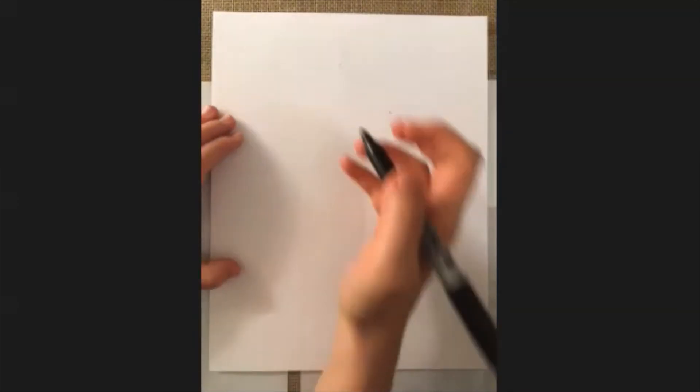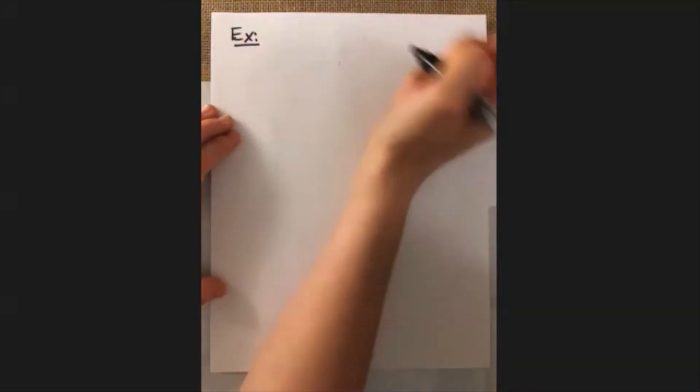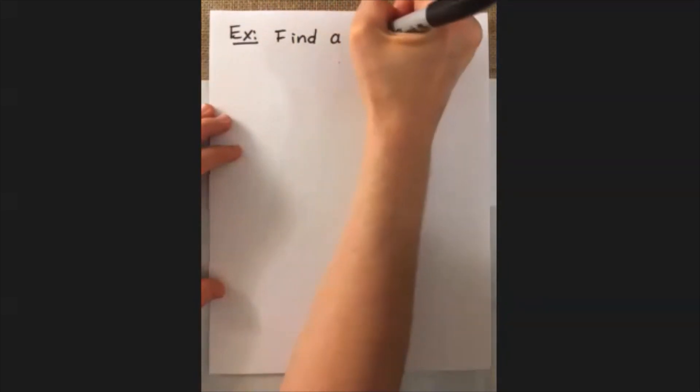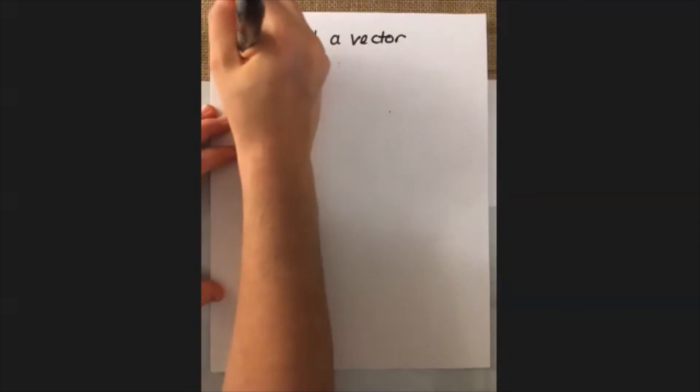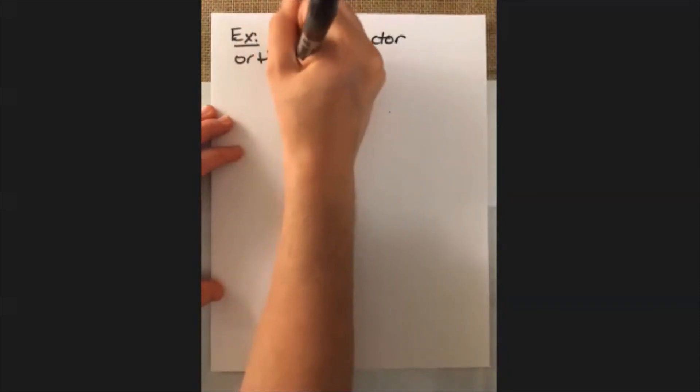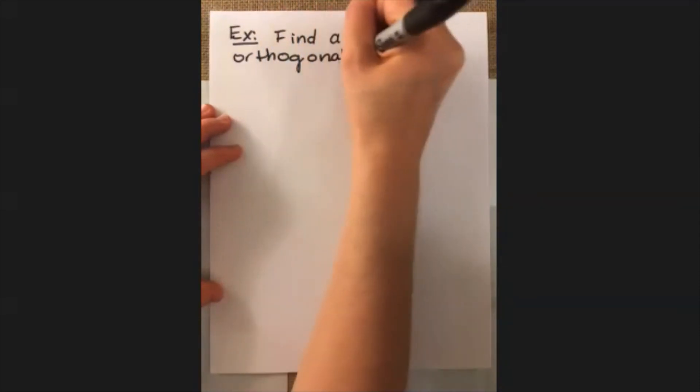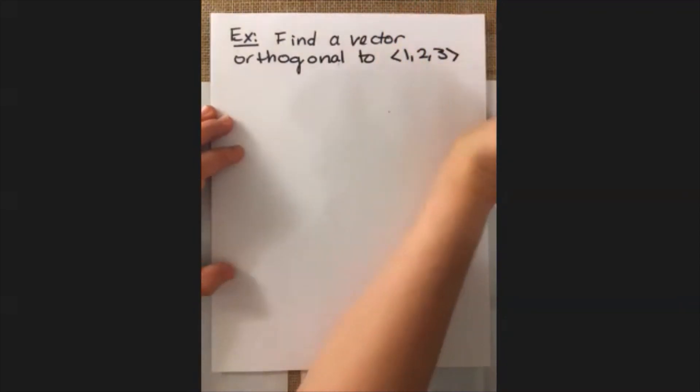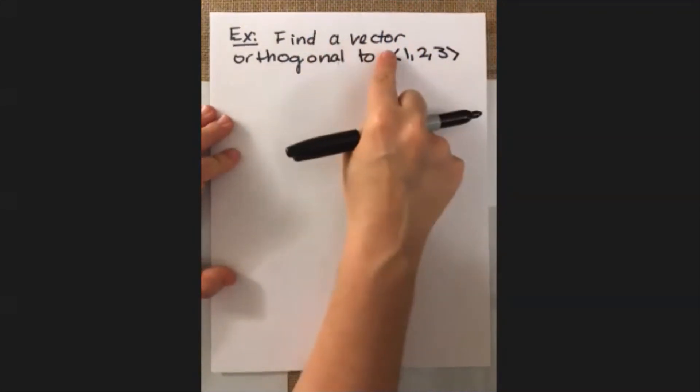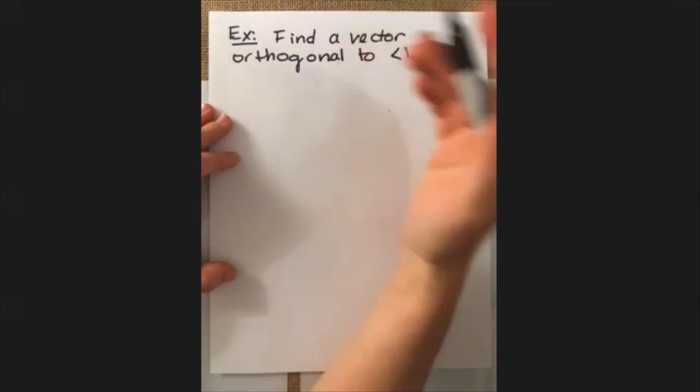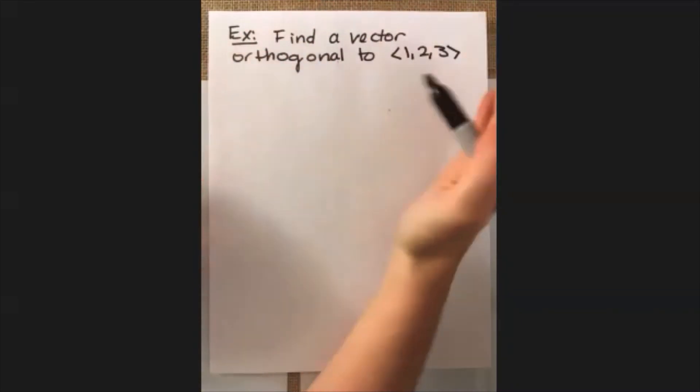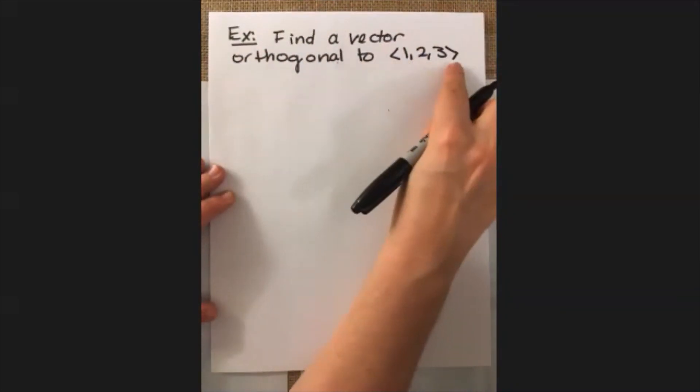Another thing we can do is use this to find vectors that are orthogonal to other vectors. And that's exactly what we're going to do in this next example. So we're going to find a vector that is orthogonal to the vector <1, 2, 3>. Now, I want to point out that it's a vector, not the vector. There's not a particular one that we're looking for.